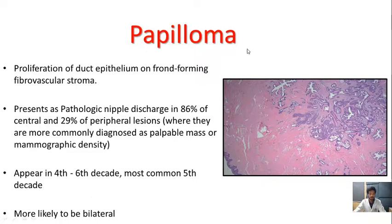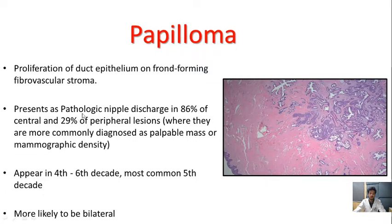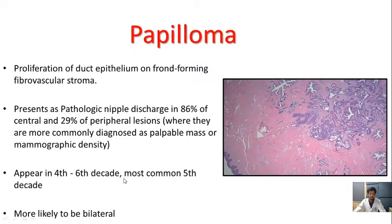The next entity is papilloma, which is a proliferation of duct-type epithelium on frond-forming fibrovascular stroma. It presents with pathological nipple discharge — the most common presentation is nipple discharge in 96% of patients with central-type papilloma and 29% in peripheral regions. Peripheral papillomas are more commonly present in older age groups. It is most commonly seen in the 4th to 6th decades, most commonly in the 5th decade, and more likely to be bilateral.